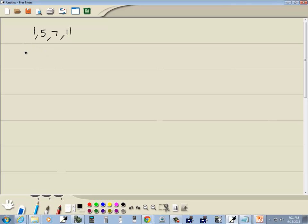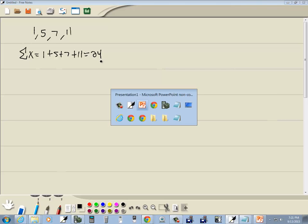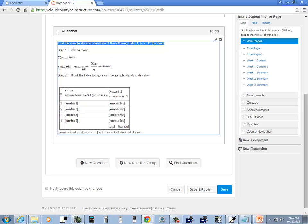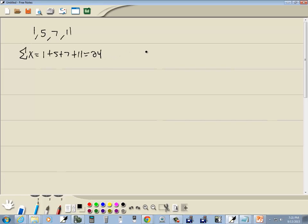First thing we want to do is add these together. Those are considered our x values. So we've got 1 plus 5 plus 7 plus 11, and that gives us 24. Now, I ask you in the steps to find the sum, and all you would input there is 24.